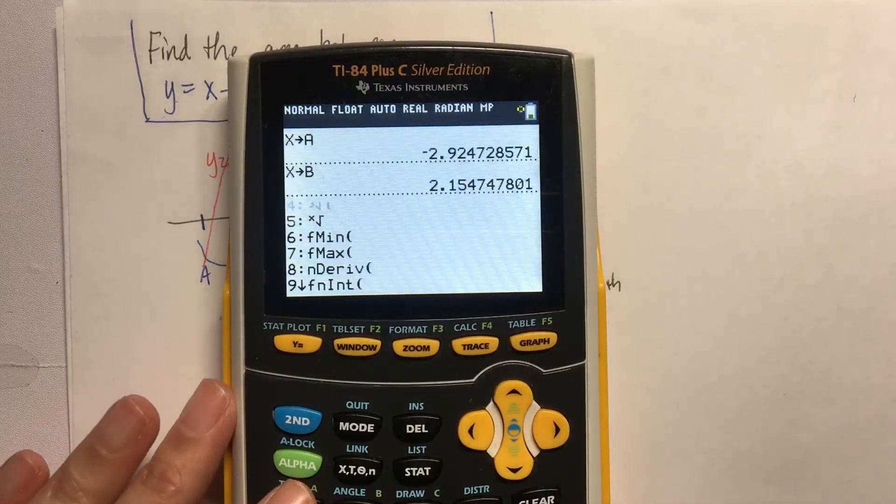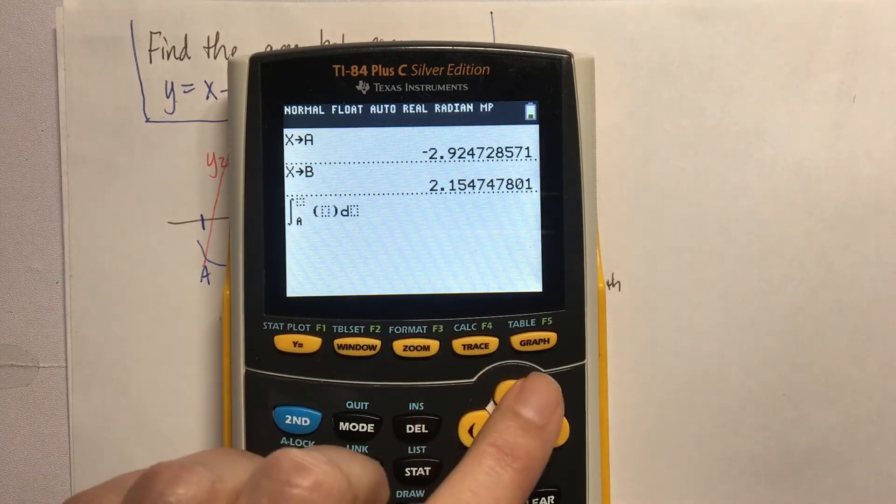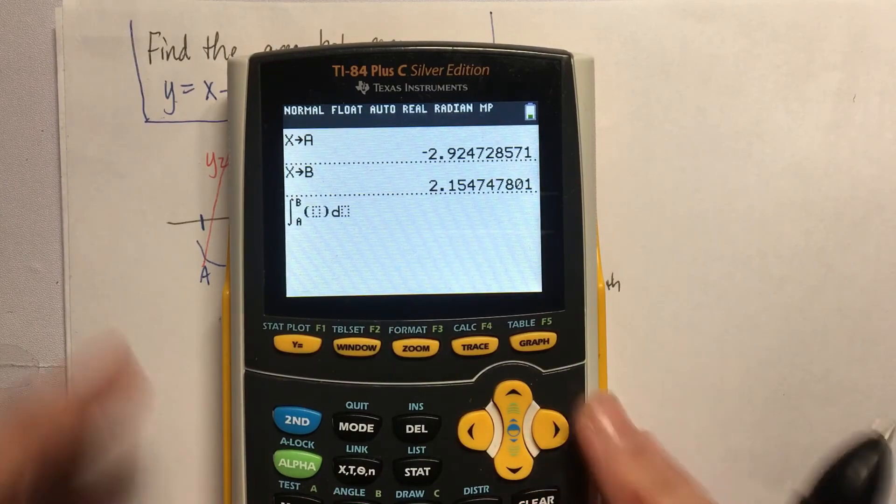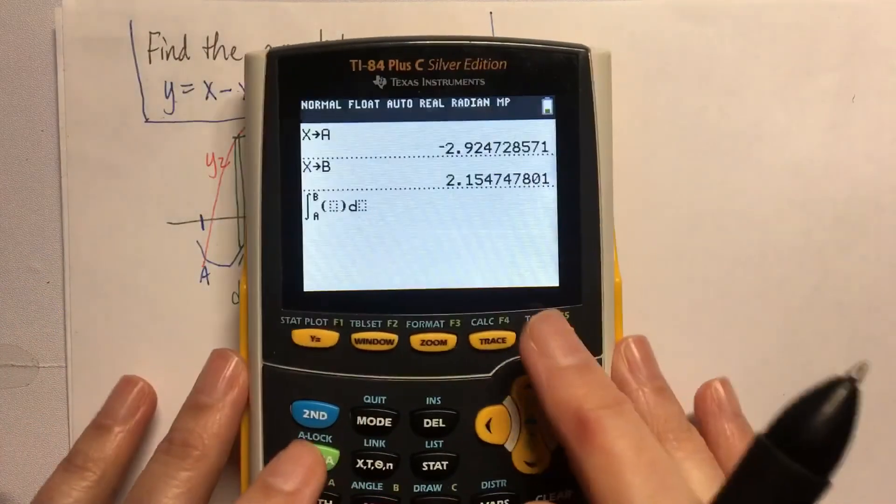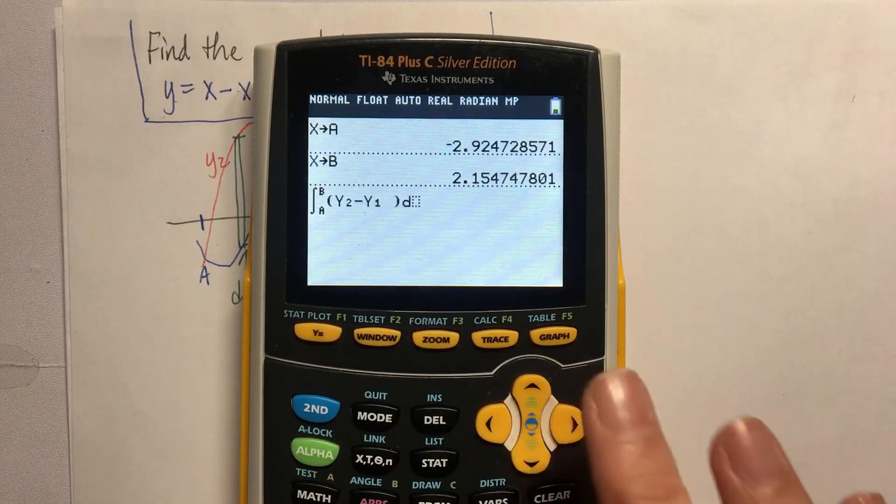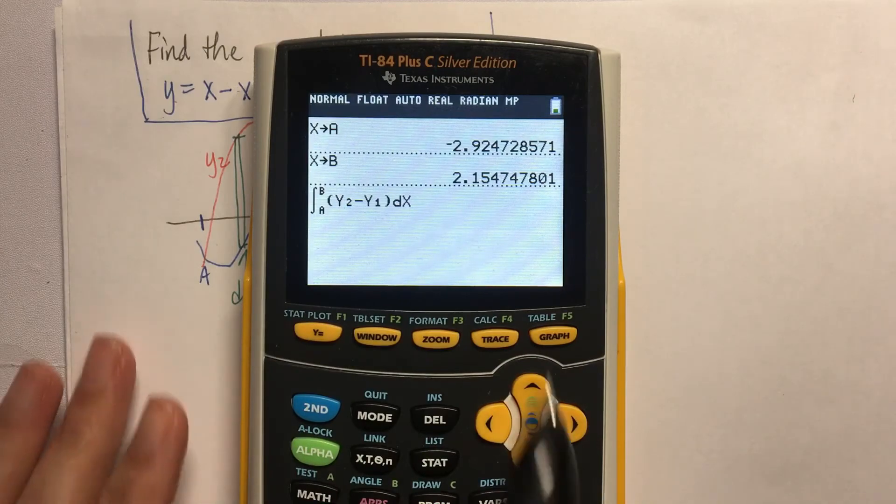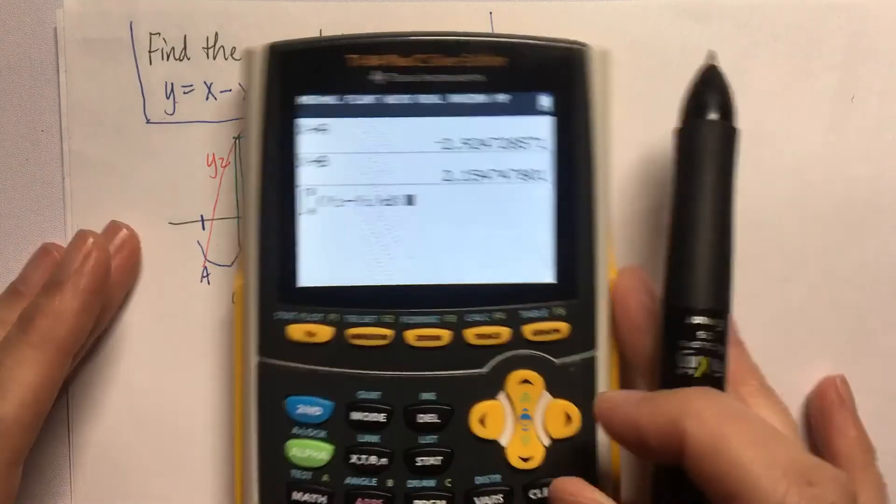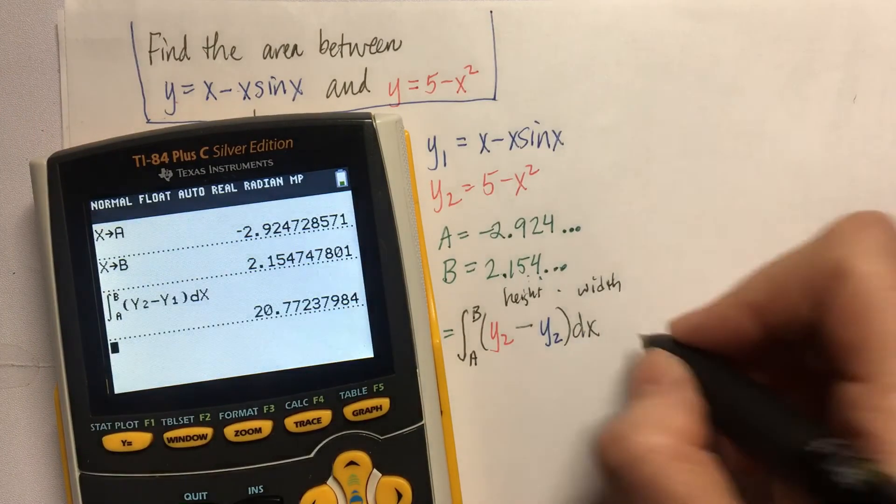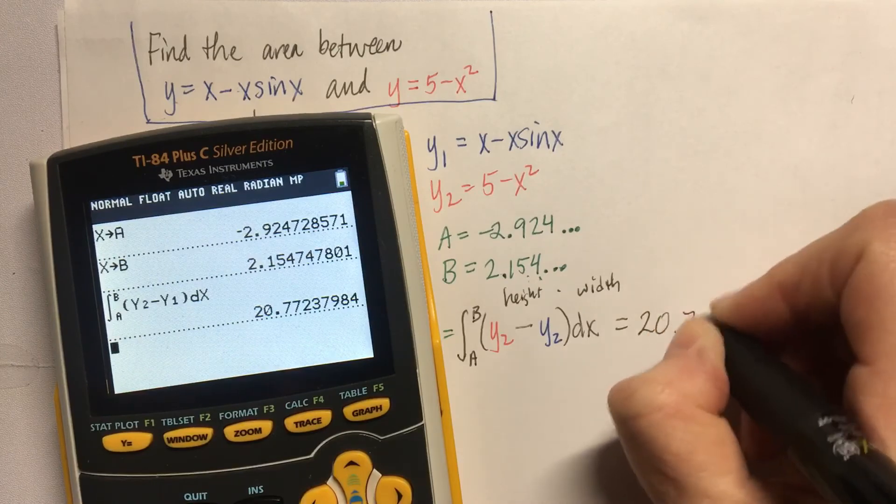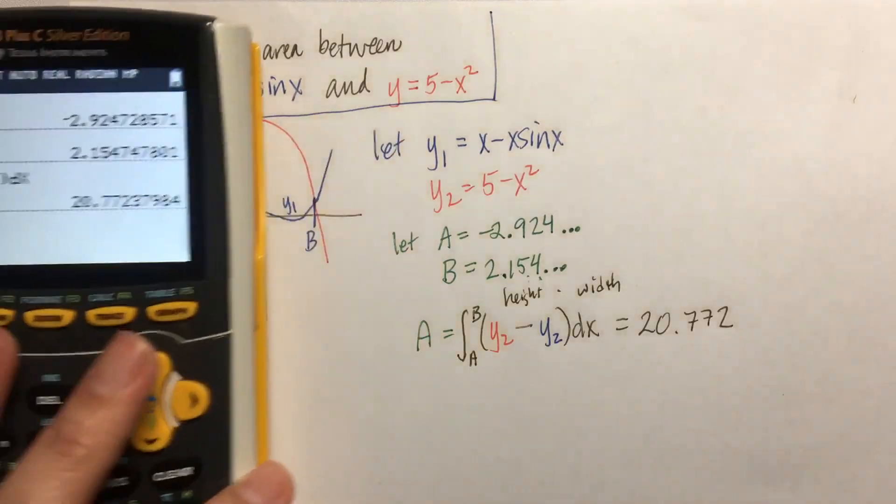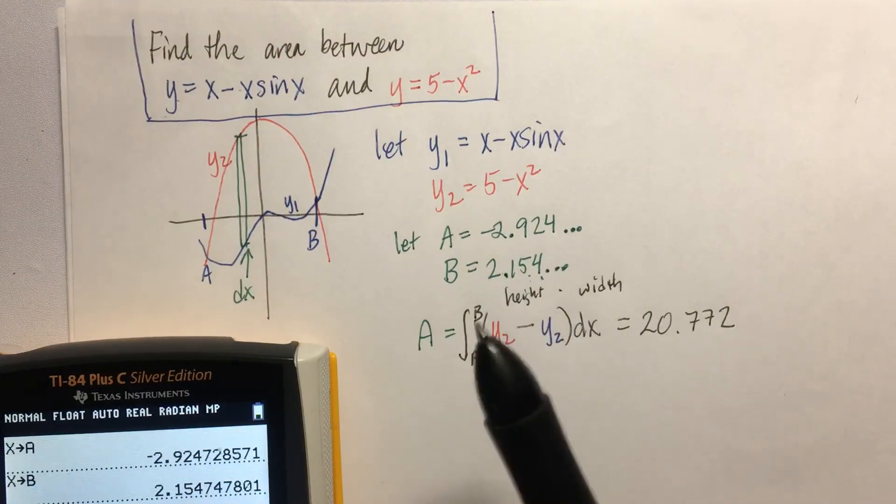If I hit math and nine, I can put my alpha A in for my lower bound, alpha B for my upper bound, and then Y2. So alpha trace two minus alpha trace one and an X. Notice that what's typed here is exactly the same as what's written there. It's awfully convenient. I hit enter and I can write down 20.772 and I am done. So how cool is that? We have the power of calculators on our side.